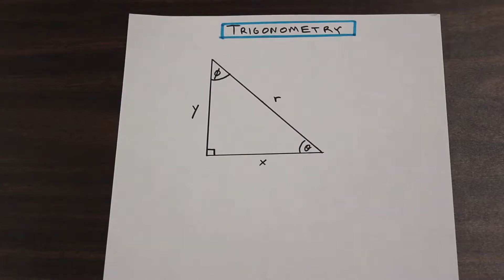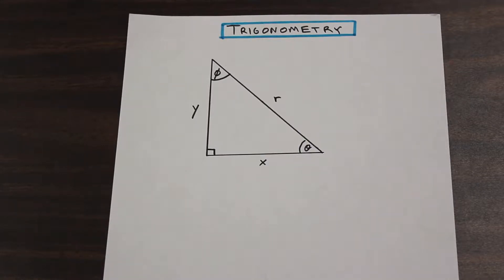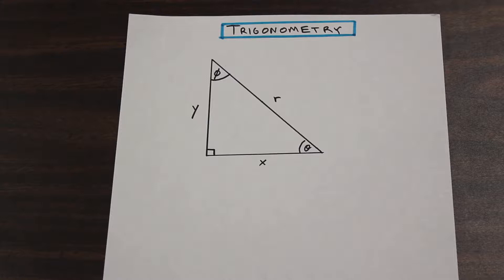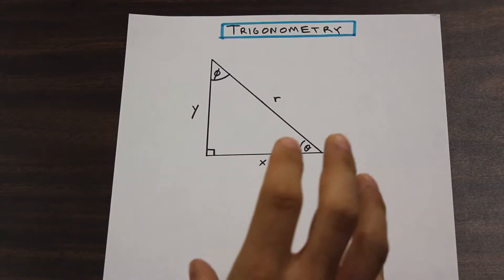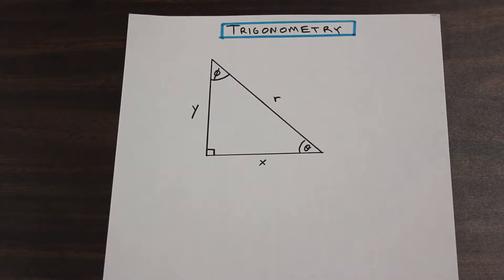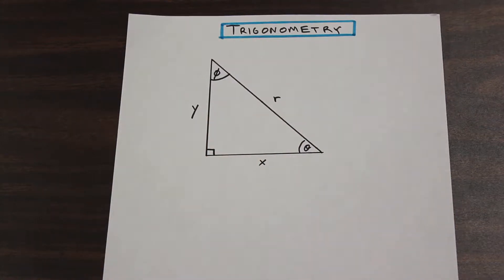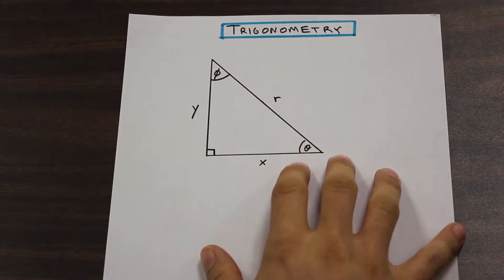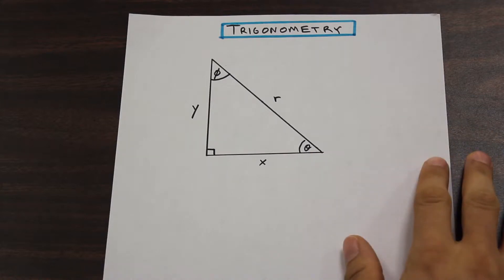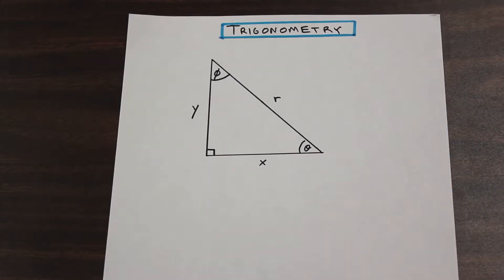Likewise, if you're from another country and you've come to an English-speaking country, I know it can be confusing — terms like adjacent, hypotenuse, opposite, theta, and phi aren't words that you're used to. So the purpose of this video is to explain the different terms, what they mean, and then we'll do a couple of really simple examples on how to use sine, cosine, and tangent. So let's begin.